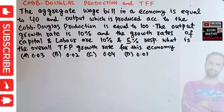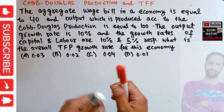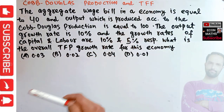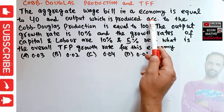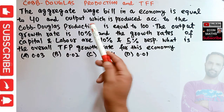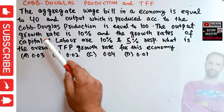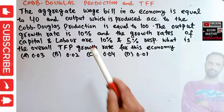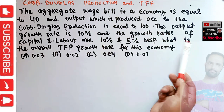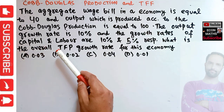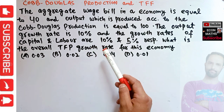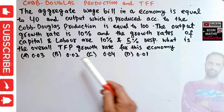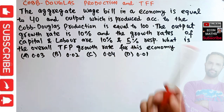In this video we will learn how to find out the growth rate of total factor productivity. The question goes like this: the aggregate wage bill in an economy is equal to 40, and output, being produced according to the Cobb-Douglas production function, is equal to 100. The output growth rate is 10 percent, and growth rates of capital and labor are 10 percent and 5 percent respectively. What is the overall total factor productivity growth rate? The options are 0.03, 0.02, 0.04, and 0.01.